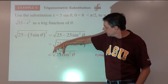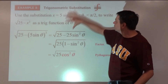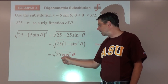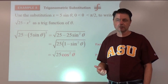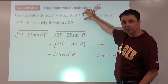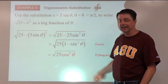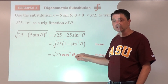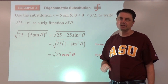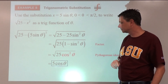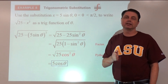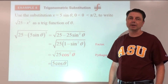Now take the square root of the product: square root of twenty-five is five, and we need the square root of cosine squared theta. Since theta is in quadrant one, cosine is positive, so we don't need absolute value bars — the answer is simply five cosine theta. If we didn't know the quadrant, we'd need absolute value bars to guarantee a positive output.